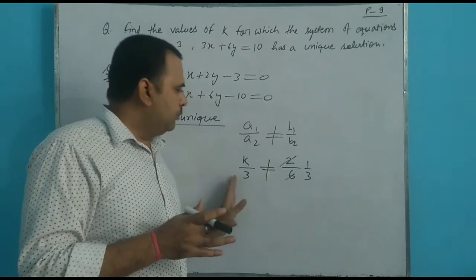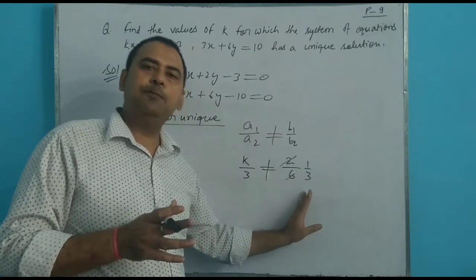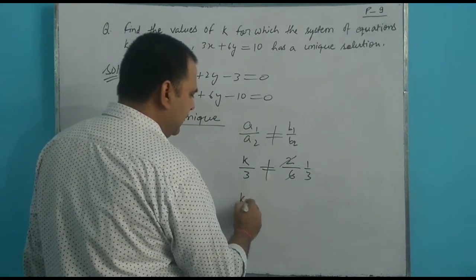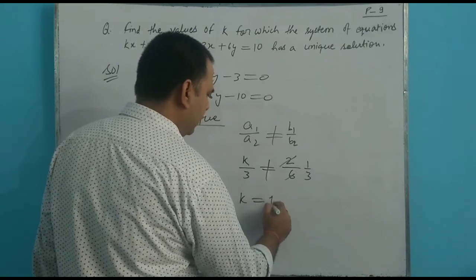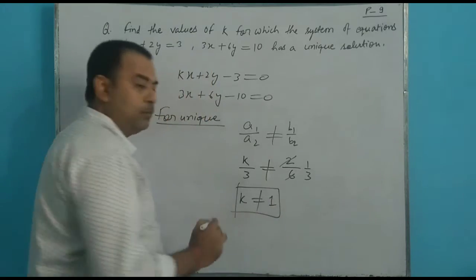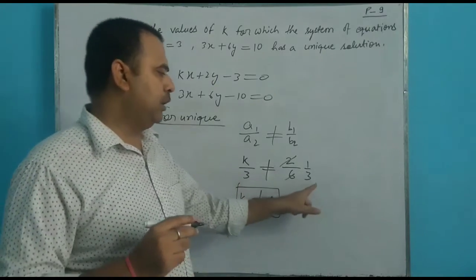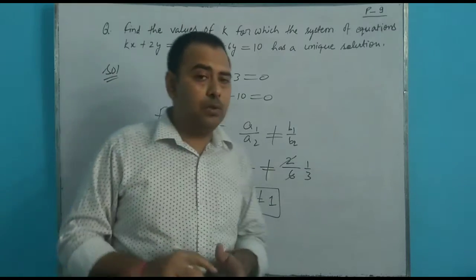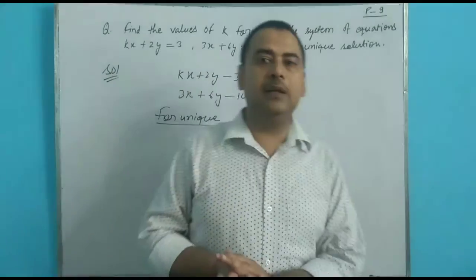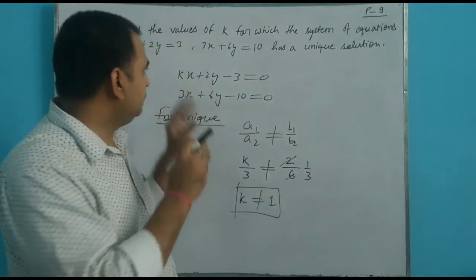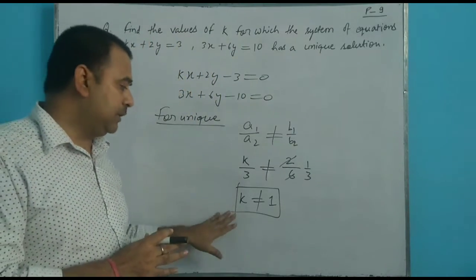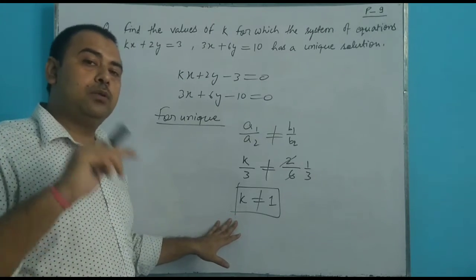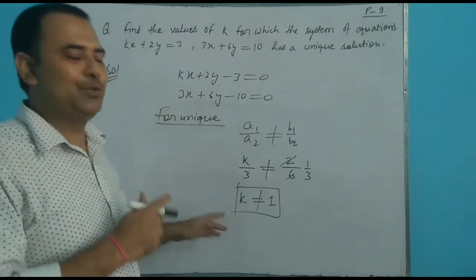Cross-multiplying, we get k is not equal to 1. So for the system to have a unique solution, the condition is k is not equal to 1. Thank you.